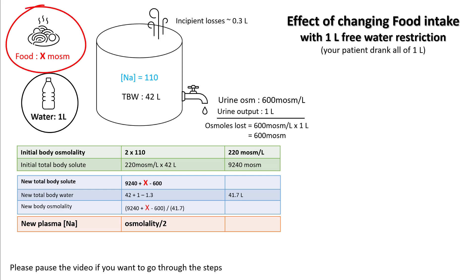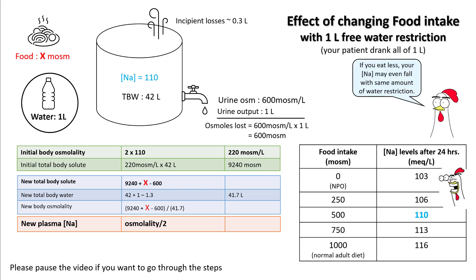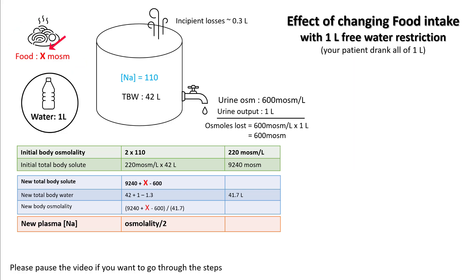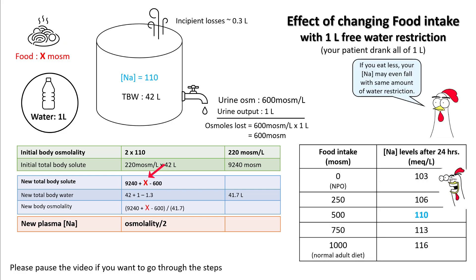Let's look at the effect of changing food intake with one liter free water restriction. Here we'll take X amount of milliosmoles in food and solve for different values of X. A normal adult diet has around 1,000 milliosmoles and an NPO patient will have zero. If you're eating a normal diet, the sodium level in the next 24 hours is going to be 116. However, if you eat half your diet — 500 milliosmoles — your sodium will not have changed. And if you eat nothing, your sodium actually falls down to 103. So if you eat less, your sodium may even fall with the same amount of water restriction.